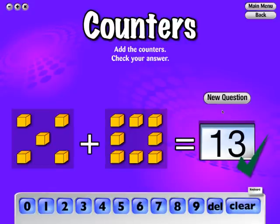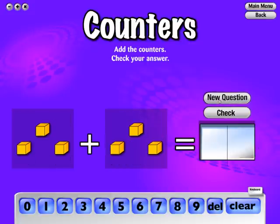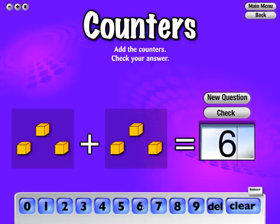You can answer using the computer's keyboard or using the on-screen keyboard supplied. If the question is correct, a tick will appear. To create a new question, click on the New Question button. If the question is incorrect, the answer will then turn red. Just click on the answer and try again.